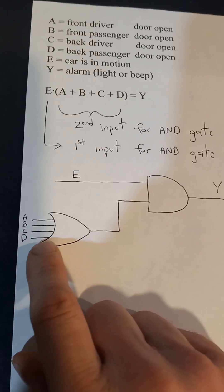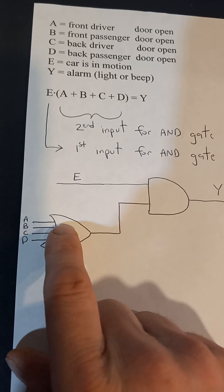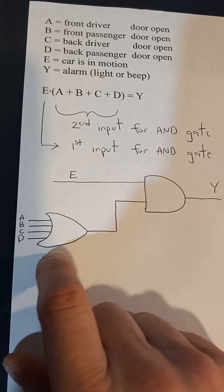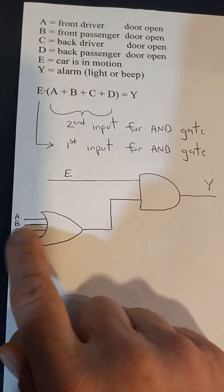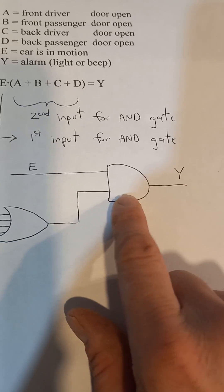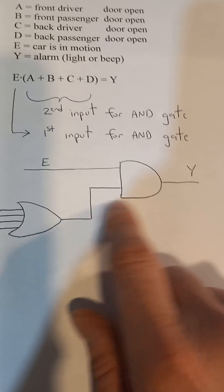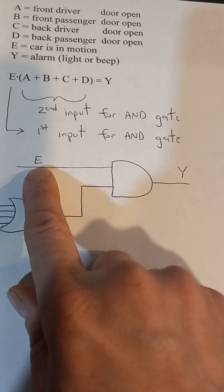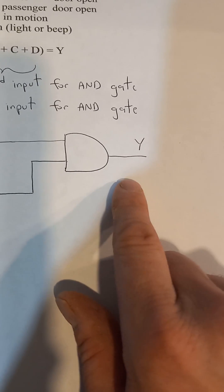You could have A, or B, or C, or D. One of your doors is open, and one of those is a hit. It'll put a one to this AND gate, and your car's running or in motion. You get the other one, then you get your output.